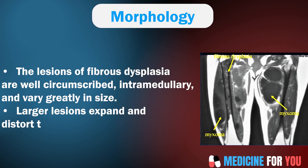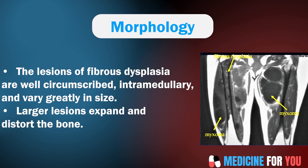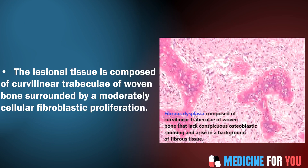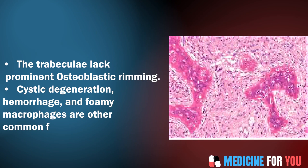Morphology. The lesions of fibrous dysplasia are well-circumscribed, intramedullary, and vary greatly in size. Larger lesions expand and distort the bone. The lesional tissue is composed of curvilinear trabeculae of woven bone surrounded by a moderately cellular fibroblastic proliferation. The trabeculae lack prominent osteoblastic rimming, and hemorrhage and foamy macrophages are other common findings.